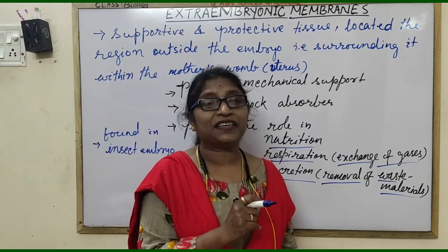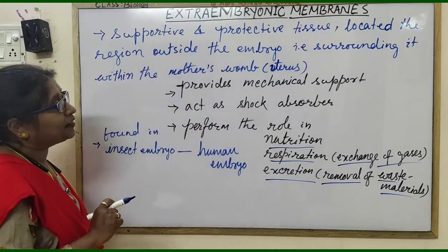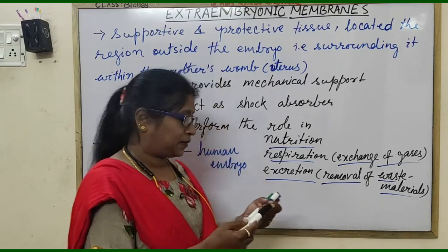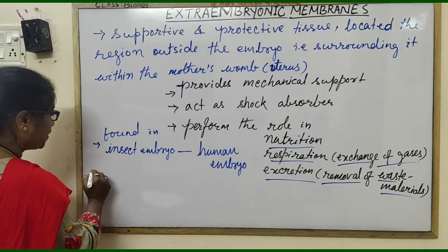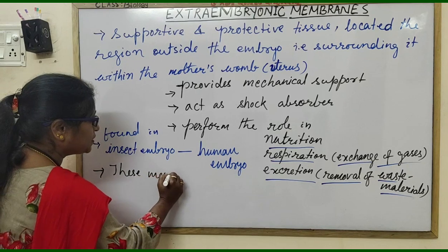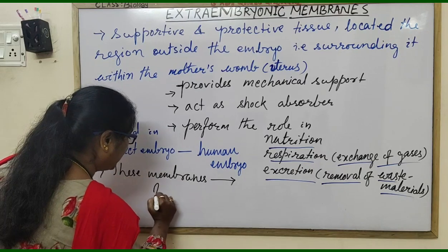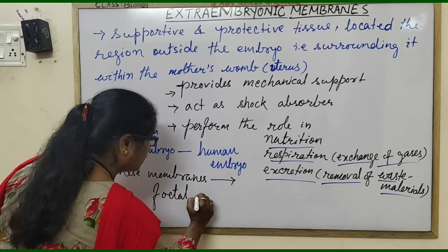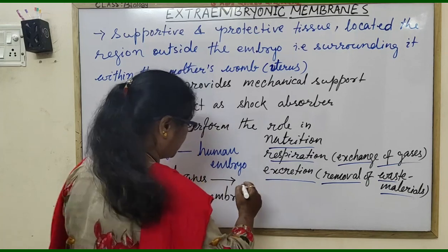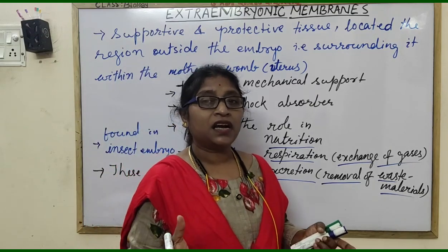After 8 weeks of development of the embryo, it is known as a fetus. That is why extra-embryonic membranes are also known as fetal membranes — because after 8 weeks of development, the embryo is called a fetus, when all the organs are developed.